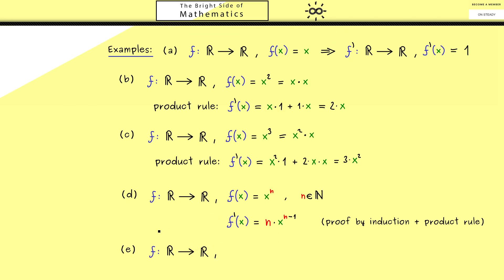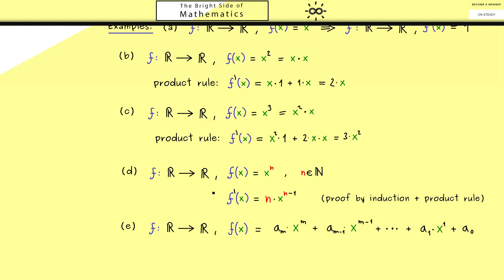With this we are ready for the general example of a polynomial function. The general formula has coefficients a0, a1, and so on. We can simply use the sum rule and the product rule to calculate the derivative. We form the derivative for every term in the sum separately: we don't change the coefficient, we put the power in front and reduce the power by 1. What we get is a new polynomial where the constant term a0 has vanished and the new constant term is a1.